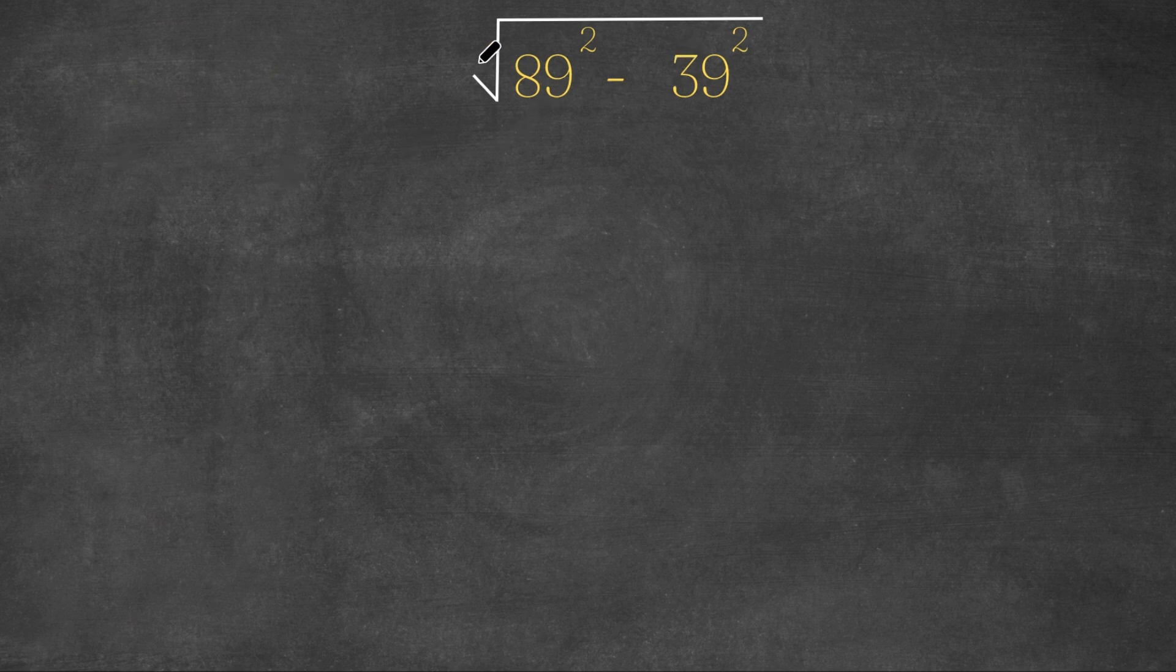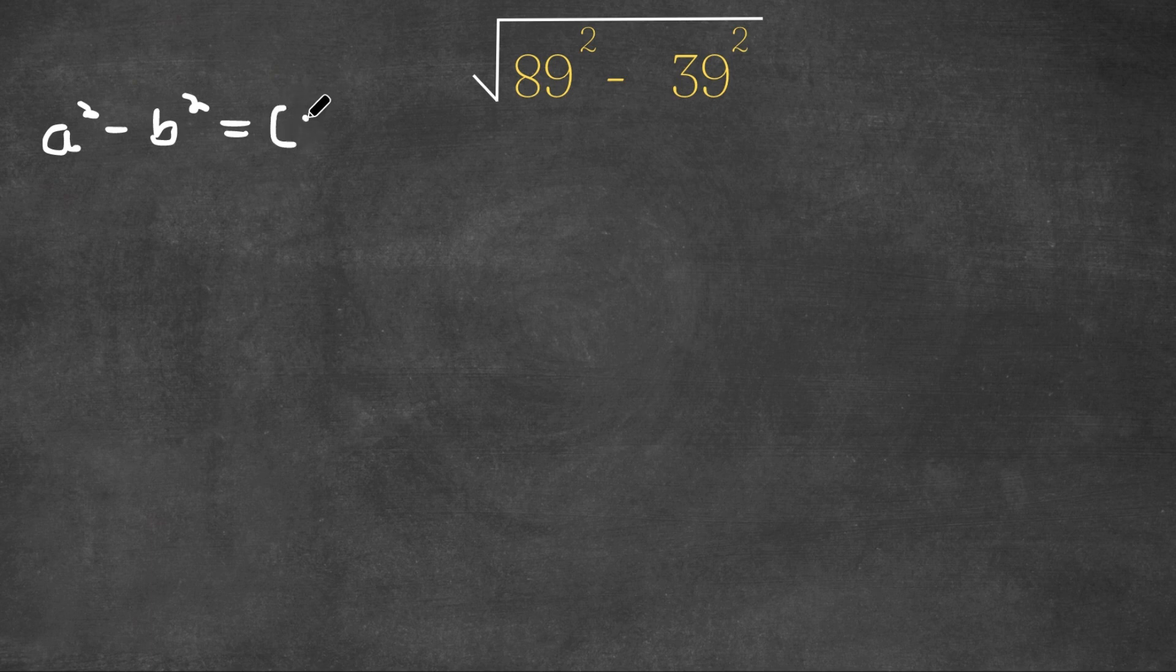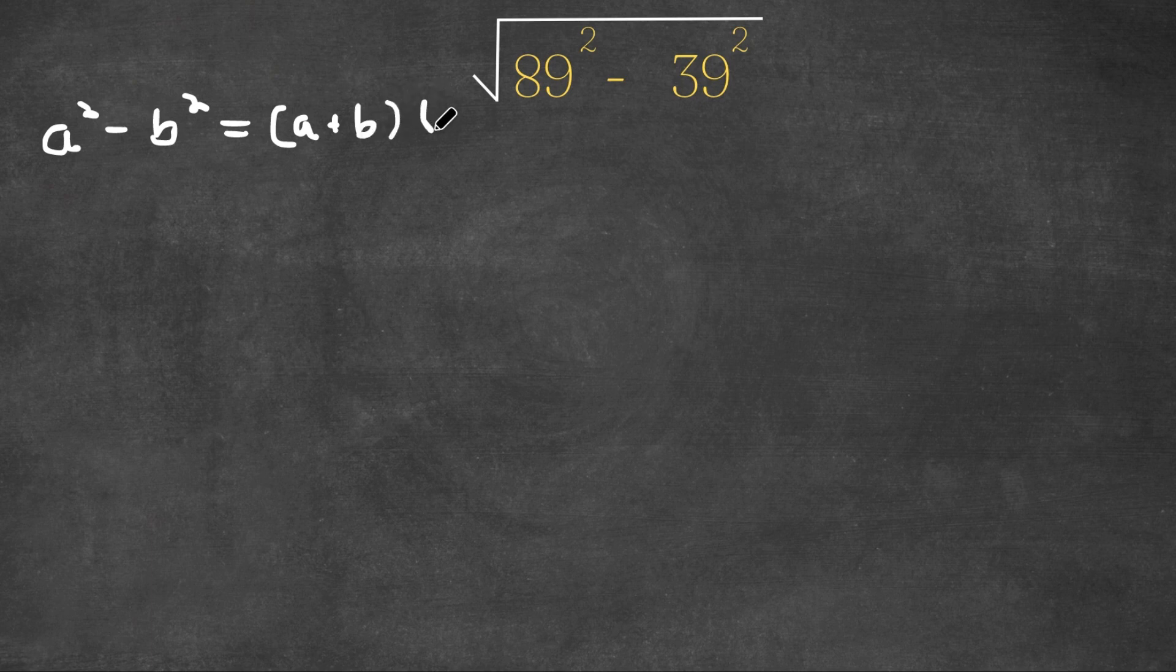Now let's first ignore the square root and just focus on what's inside. So we have 89² - 39², and if we actually have something in the form a² - b², this is equal to (a+b)(a-b).